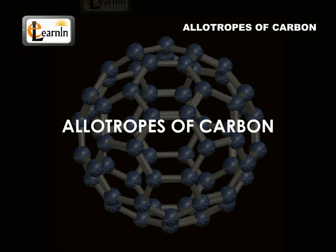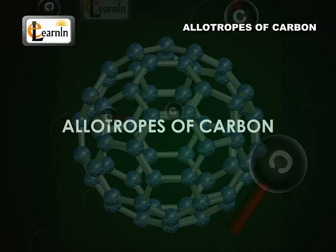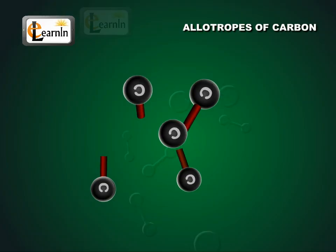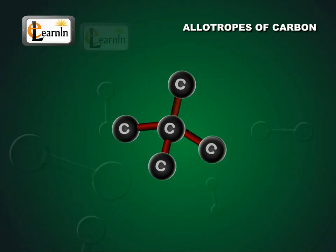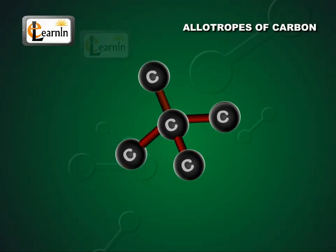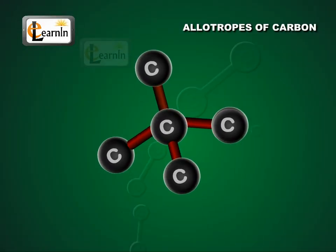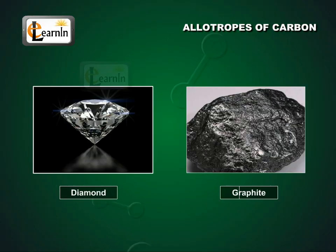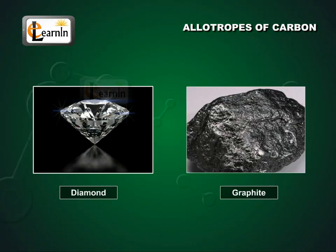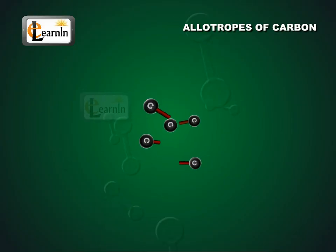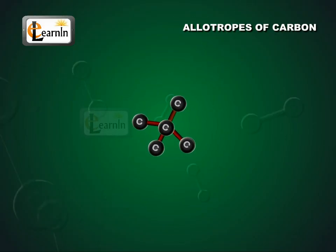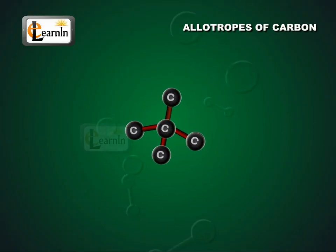Allotropes of Carbon. The element carbon occurs in different forms in nature, with widely varying physical properties. Both diamond and graphite are formed by carbon atoms. The difference lies in the manner in which the carbon atoms are bonded to one another.